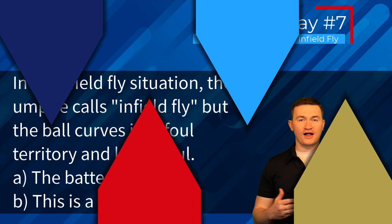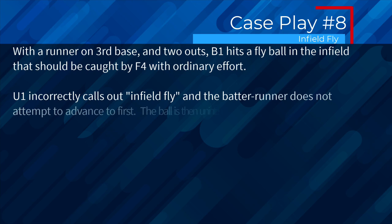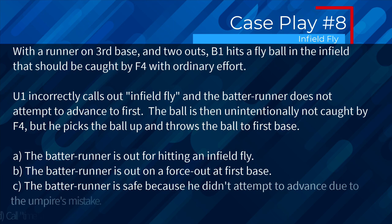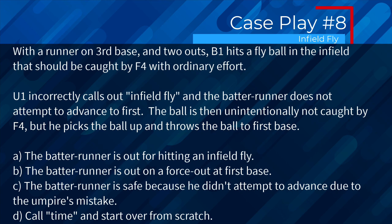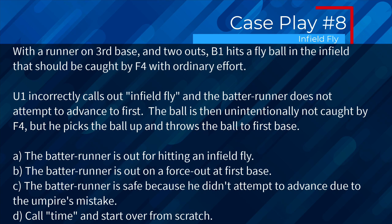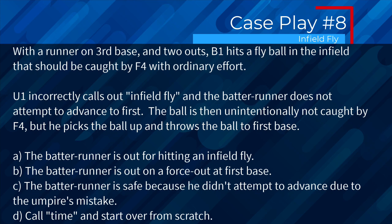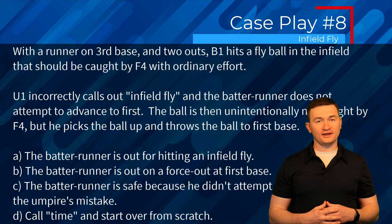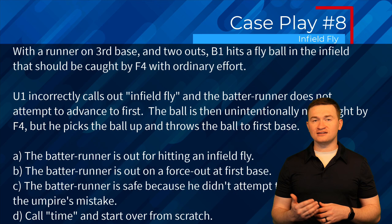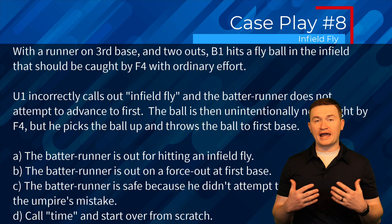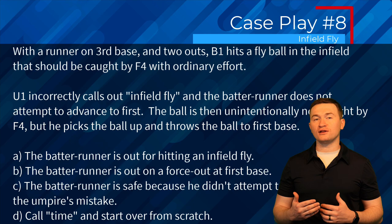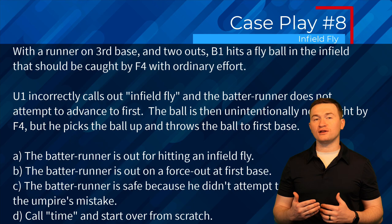Case play eight: with a runner on third base and two outs, B1 hits a fly ball in the infield catchable by F4 with ordinary effort. U1 incorrectly calls infield fly and the batter-runner does not attempt to advance. The ball is unintentionally not caught by F4, who picks it up and throws to first. Is the batter-runner out for hitting an infield fly, out on a force out at first, safe due to the umpire's mistake, or do we call time and start over? The correct answer is B — force out at first. The casebook states that players are just as responsible for recognizing an infield fly situation as the umpires, so the batter-runner is still expected to advance even if an infield fly was incorrectly called.